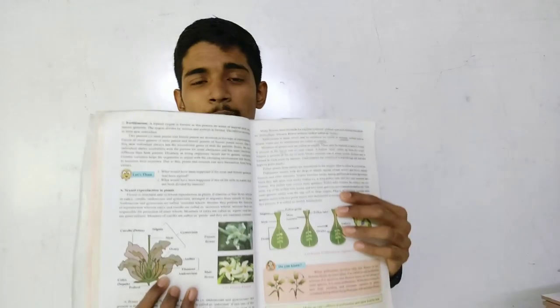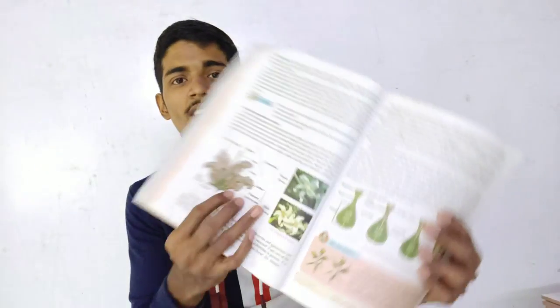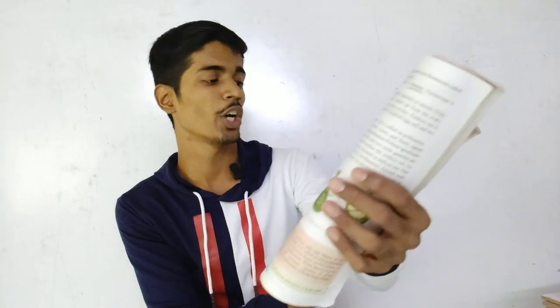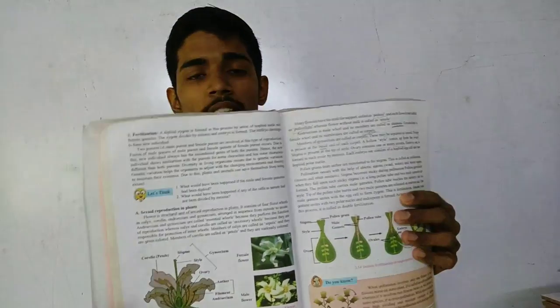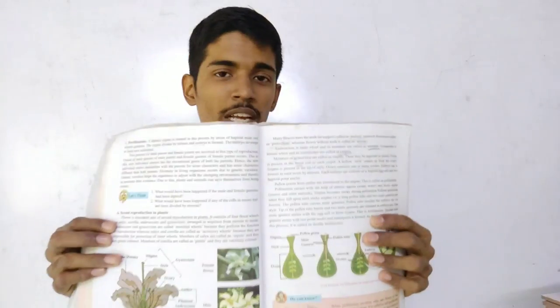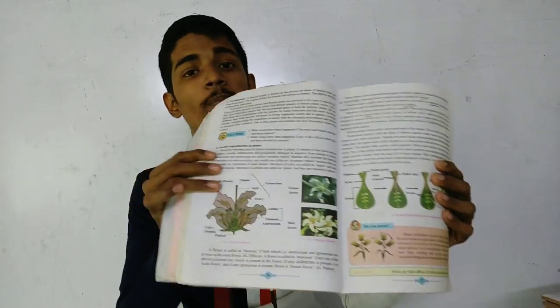This is very important in terms of board examination — sexual reproduction in plants is a five-mark answer. I suggest you memorize this answer and also practice the diagram, because one mark is for the diagram, one mark for labeling, and three marks for explanation. That makes five marks which should go directly into your pocket.